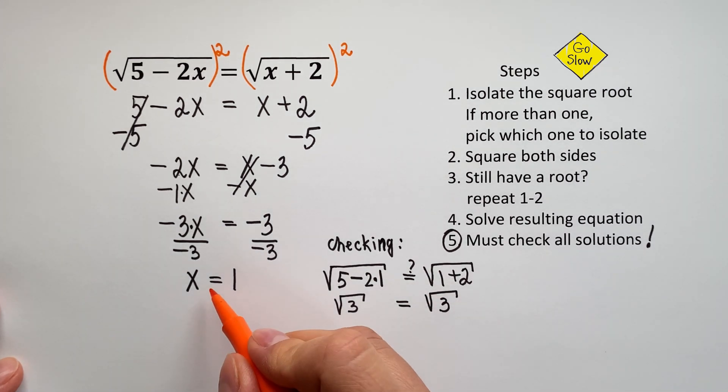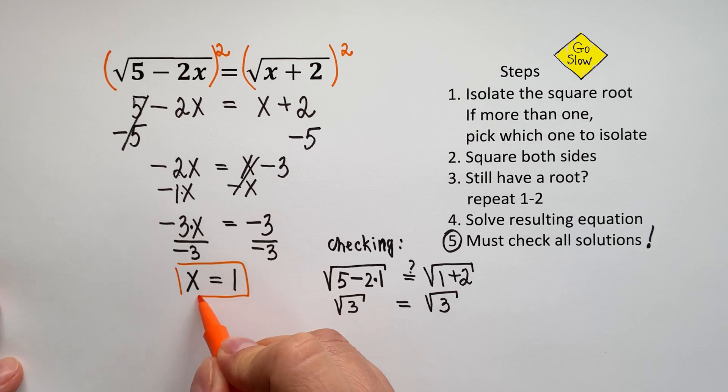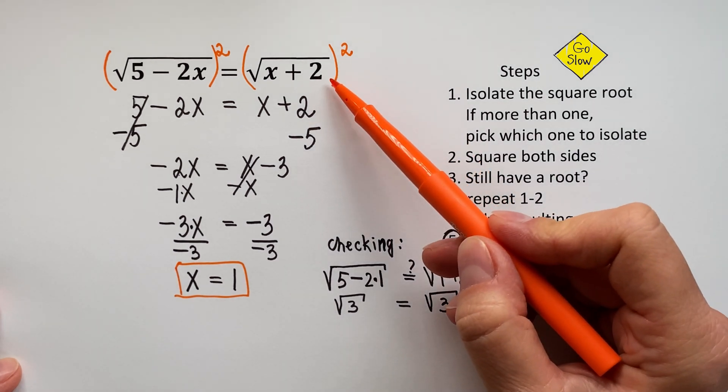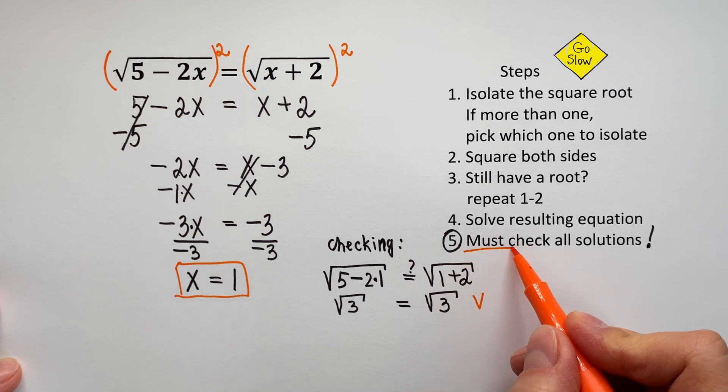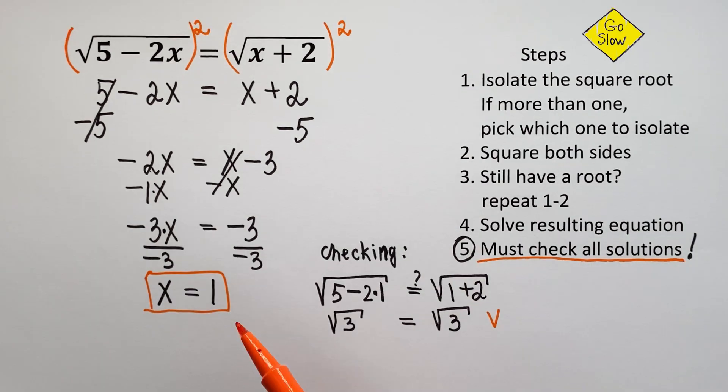So our solution, x equals 1, checked out because we have square root of 3 equals square root of 3. But if these are not equal, then our solution doesn't check out, and it means that the equation does not have solutions. So you must always check solutions. So our solution, x equals 1, checks out.